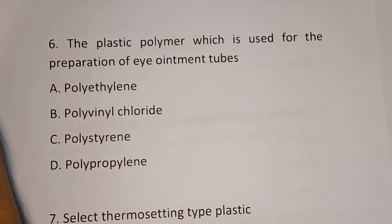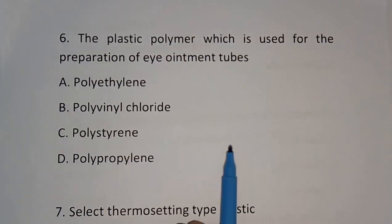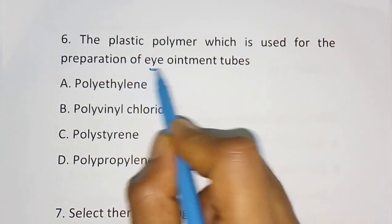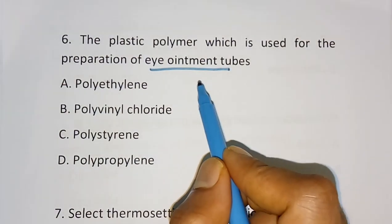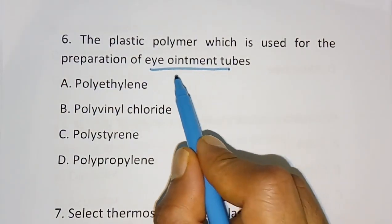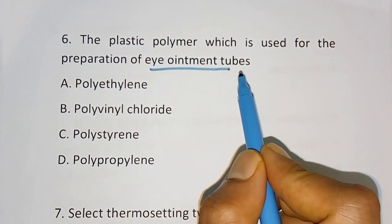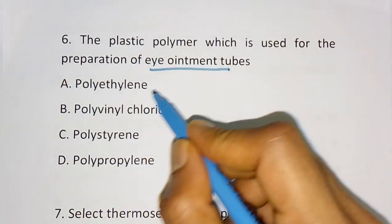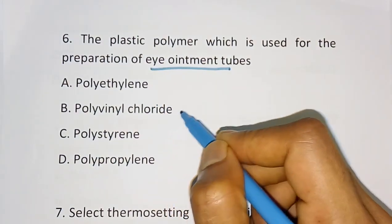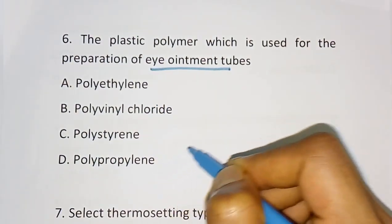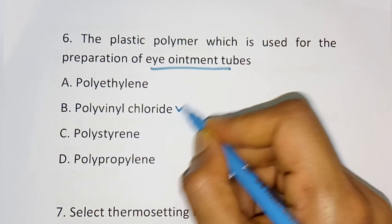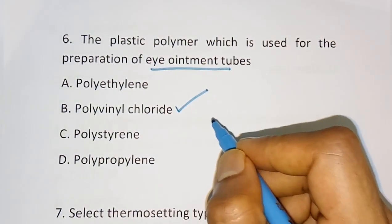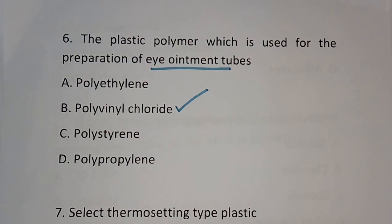Question number 6: The plastic polymer used for the preparation of eye ointment tubes — options are polyethylene, polyvinyl fluoride, polystyrene, polypropylene. The correct answer is PVC, that is polyvinyl fluoride, which is used for preparing eye ointment tubes.